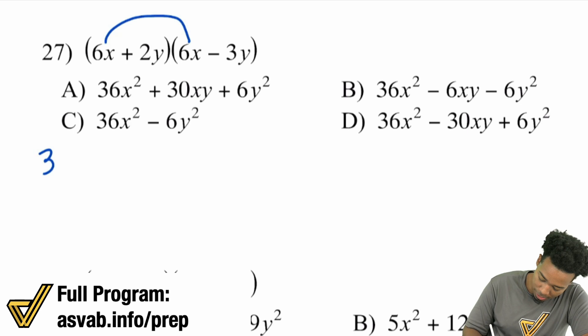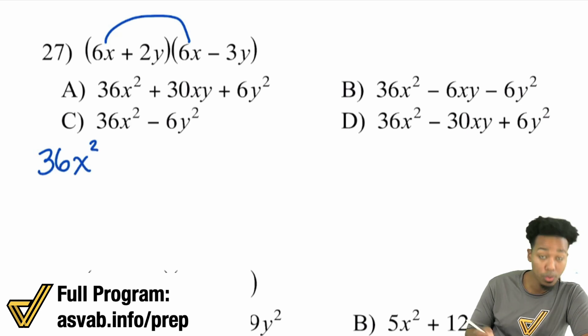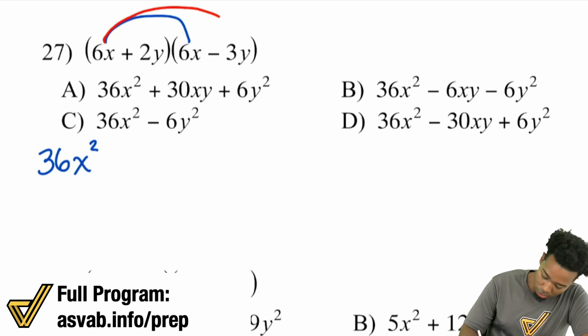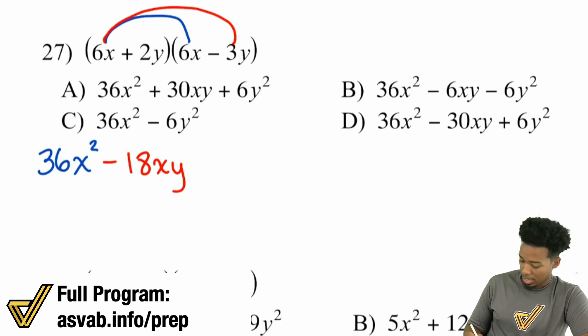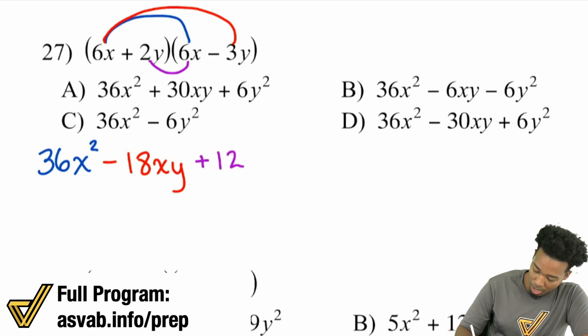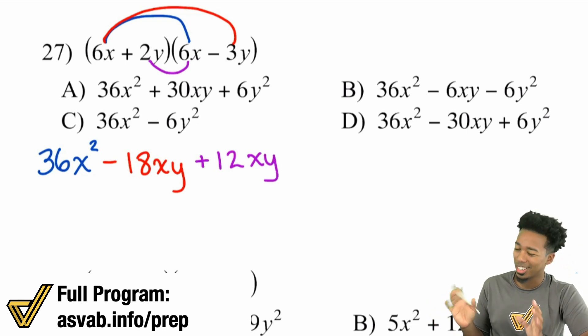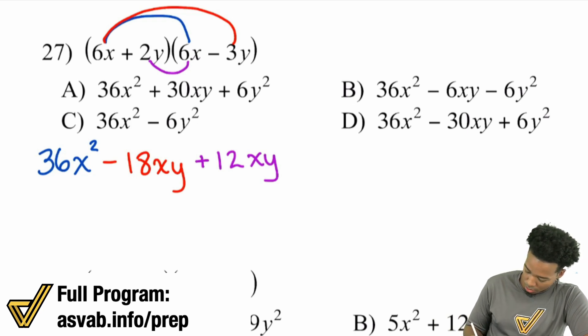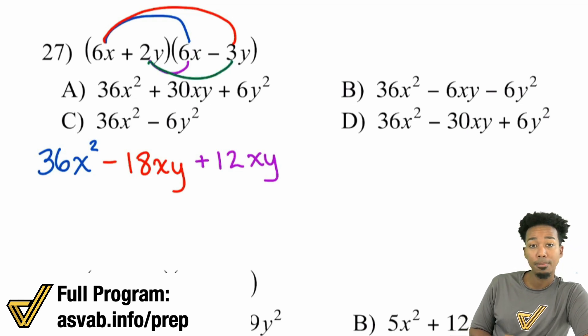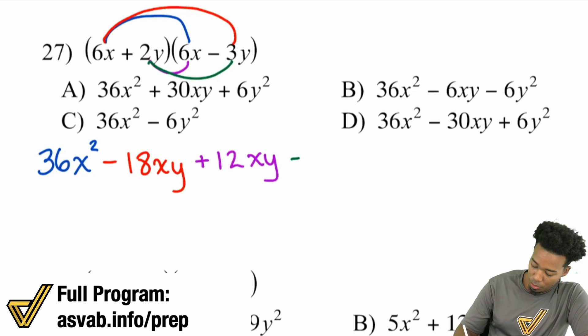So again, just make sure every term from one parentheses multiplies with every term from the other. So the 6X needs to go there and there. 6X times 6X. 6 times 6 is 36. X times X is X squared. Next up, 6X needs to also multiply with that negative 3Y. So positive times a negative is a negative. 6 times 3 is 18. X times Y is just X times Y. Next up, in purple, 2Y times 6X. Over here, 2 times 6 is going to be 12. Y times X is just XY. You can do YX, but again, alphabetical order is the proper way.